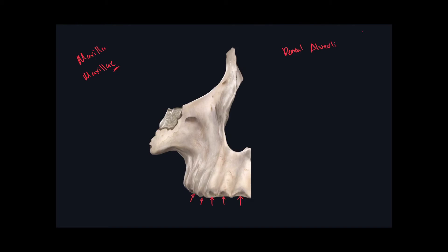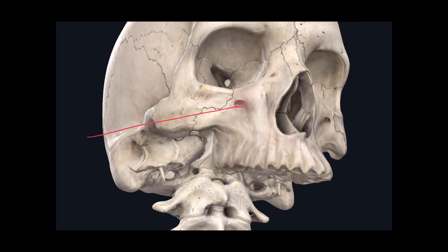Now we need to use our imagination to orient ourselves. Right here is where the nasal cavity would be if we had both maxillae, and right here would be a portion of the bony orbit. Because of this context, we can identify this landmark — a little hole, an opening — called the infraorbital foramen. It's called that because it's just inferior to the orbit. Here is a better view of the infraorbital foramen as well as the dental alveoli of the maxilla.